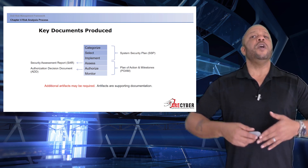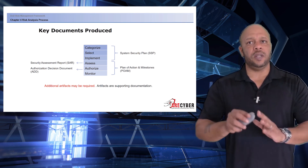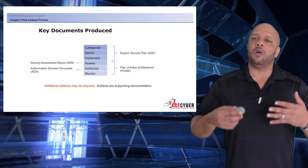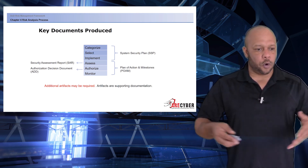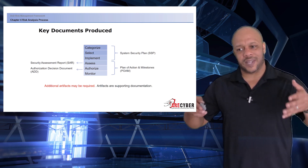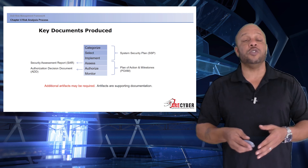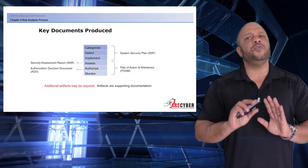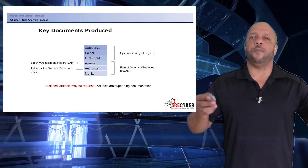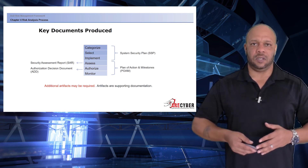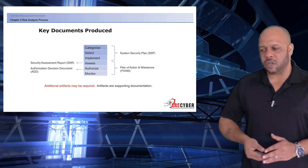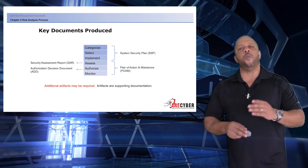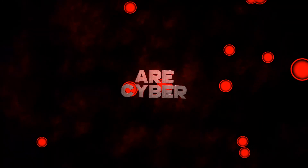However, to create all of these, especially the SSP, you need all supporting artifacts, all supporting policies, standards, and procedures from across the organization so the controls can be properly assessed. In the next section, we're going to jump into Step 1: categorization.